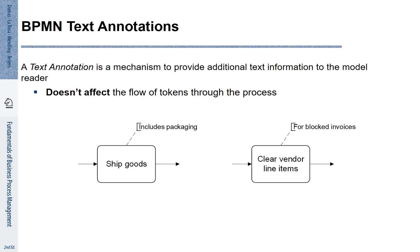Not every piece of information that we want to associate with the different activities in the process is necessarily a business object. Sometimes additional information needs to be represented. In such a case, we use BPMN text annotations. You see here two examples of BPMN text annotations. These annotations do not directly affect the way the process is executed.